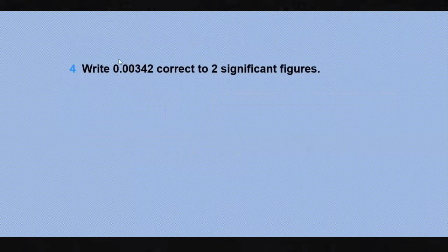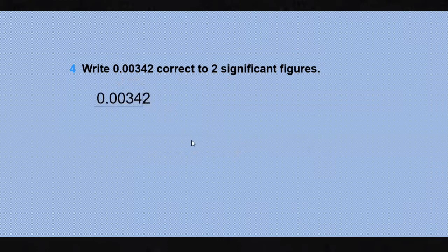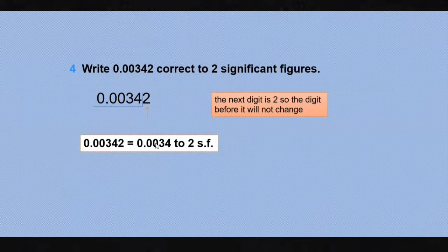Write 0.00342 correct to two significant figures. The three leading zeros at the beginning are not significant. Our first significant figure is 3. For two significant figures, look at the third significant digit, which is 2. Since 2 is less than five, there is no change to the previous digit. So the answer to two significant figures is 0.0034.